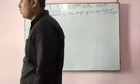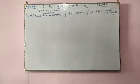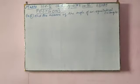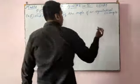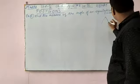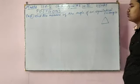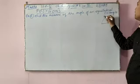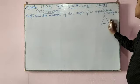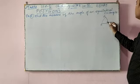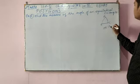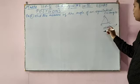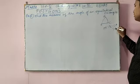Before solving this, I want to tell you what an equilateral triangle is. You know that the sum of angles of a triangle is 180 degrees. An equilateral triangle means one whose all sides are equal — sides A, B, C are all equal — and all angles are 60 degrees.